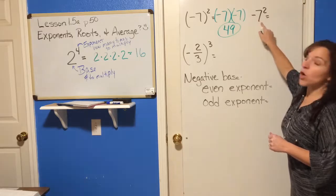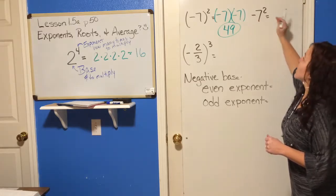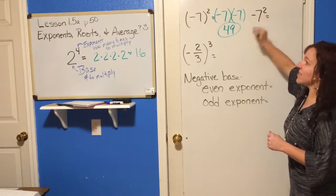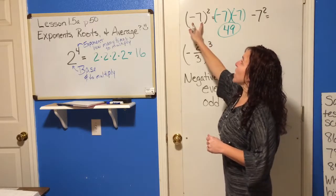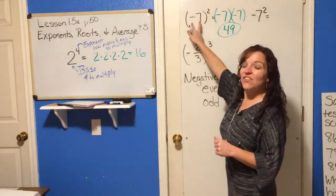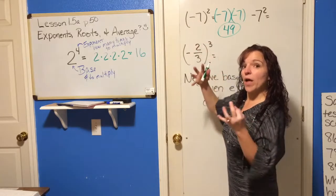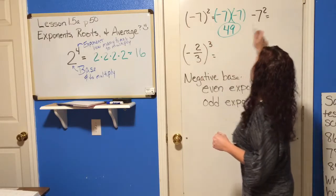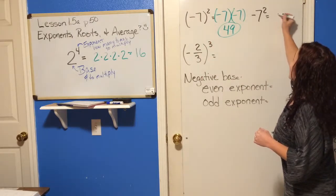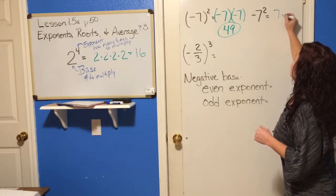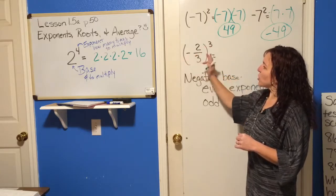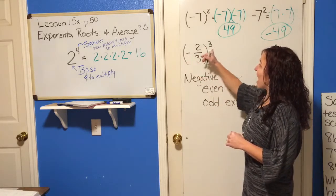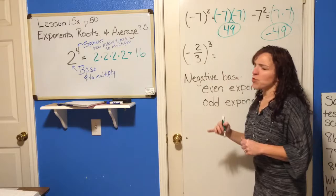So this says we're going to take 2 times 2 times 2 times 2, because 2 is our base — it's the number we multiply. 4 is how many times we multiply it. So 2 times 2 is 4, 4 times 2 is 8, 8 times 2 is 16. So 2 to the 4th power is 16, and that's how you would read that. If you have a 2, we say it's squared.